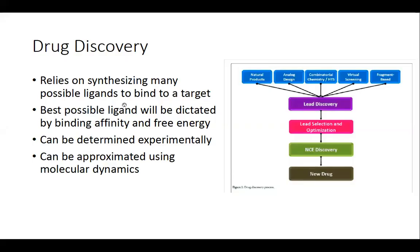Alchemical perturbations are used a lot in drug discovery, which is the process of discovering drugs. This process relies on synthesizing as many possible ligands as you can to bind to your selected target. The best possible ligand will be dictated by the binding affinity and the free energy. You can determine these values experimentally, but those experiments can take a long time and are costly. Instead, you can approximate these values with molecular dynamics.